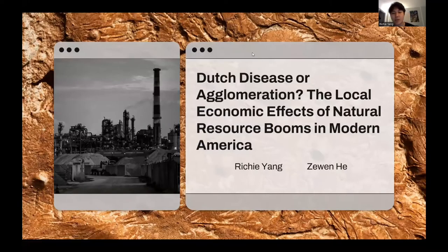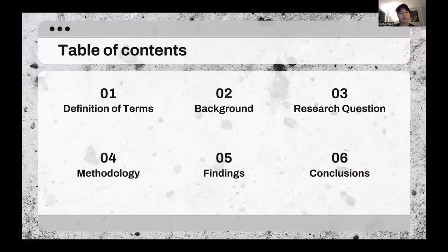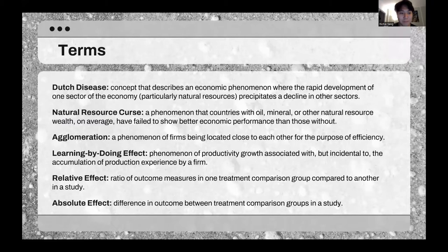Hey everyone. Today we'll be talking about the paper titled 'Dutch Disease or Agglomeration: Local Economic Effects of Natural Resource Booms in Modern America.' We'll go over some terms and give a little background, then dive into the research question, the methodology, the findings, and finally the conclusions of the paper.